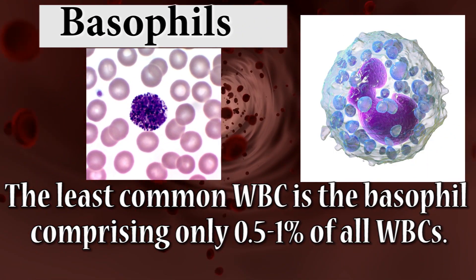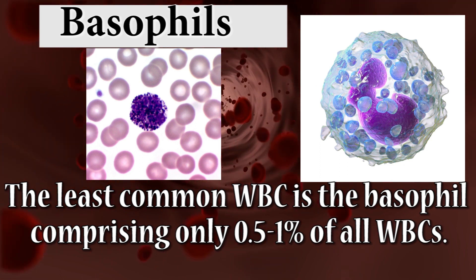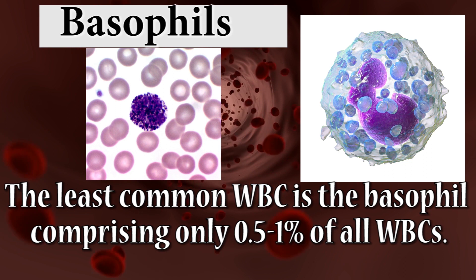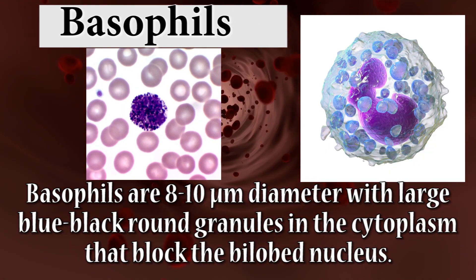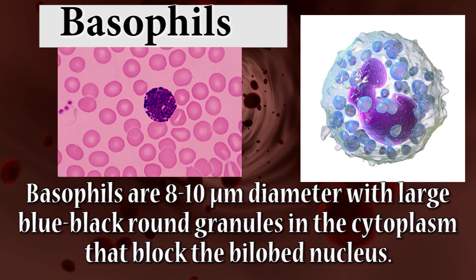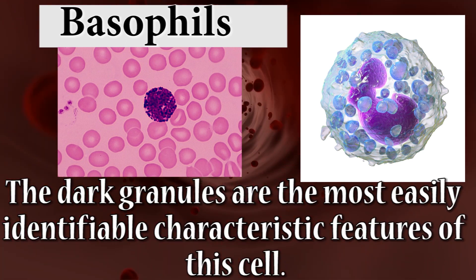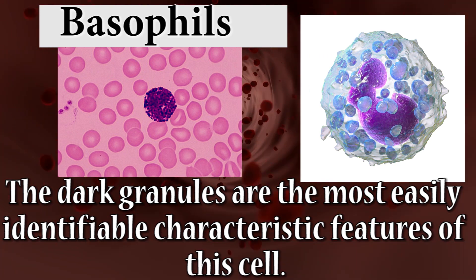Basophils are the least common WBC, comprising only 0.5 to 1% of all WBCs. Basophils are 8 to 10 micrometers in diameter with large blue-black round granules in the cytoplasm that block the view of the nucleus. The dark granules are the most easily identifiable characteristic features of this cell.